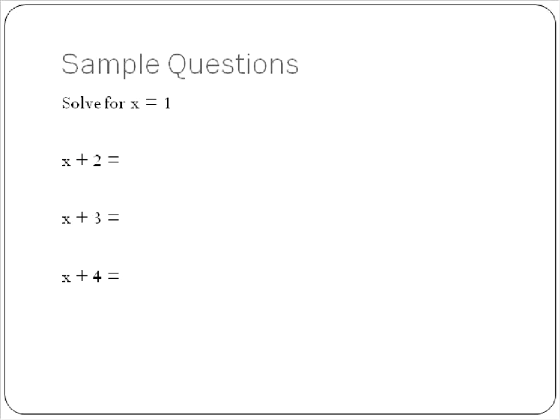So in this case, the question will then turn into — and I know this seems like a really simple question, but I wanted to start off easy — instead of x plus 2, it will turn into 1 plus 2, which is substituting the 1 in for x. And 1 plus 2 is equal to 3.